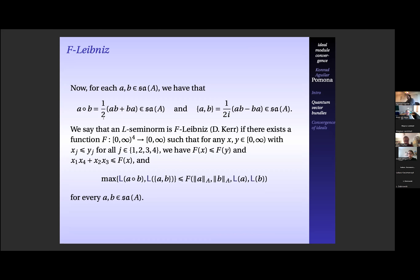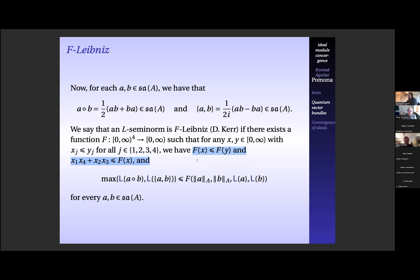Latrémolière calls this the Jordan product and this the Lie product — which may generate even more protests. Essentially, we want the domain to be a Jordan-Lie subalgebra of the self-adjoint elements, and we want it to satisfy a nice inequality giving a quasi-Leibniz rule. All these conditions are just to give a sort of quasi-Leibniz rule. We have to restrict to self-adjoint elements because various reasons, but the theory works well for the modular propinquity. There's still an answer capturing all the structure.